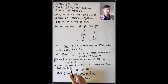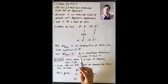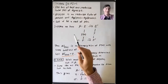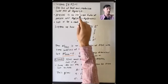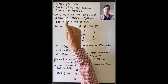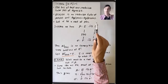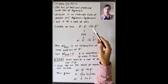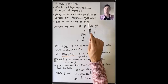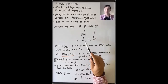Now suppose [E:F] is greater than 1. That means f(x) has a root not already in F, so f(x) has at least one irreducible factor P(x) of degree at least 2. Then σ(P(x)) is an irreducible factor of σ(f(x)) of the same degree. Let α be a root of P(x) contained in E, since E is a splitting field for f(x) and P(x) is an irreducible factor of f.